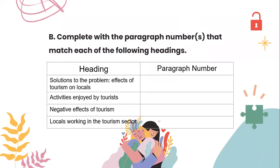Here is part B. You have to complete the paragraph number or numbers that match each of the following headings. On the left you have the headings and on the right you have the paragraph number. You have to match the headings with the correct paragraph number. You have only four headings, so you don't have to match them with all the paragraphs. The headings are: solutions to the problem — effects of tourism on locals; activities enjoyed by tourists; negative effects of tourism; and locals working in the tourism sector.